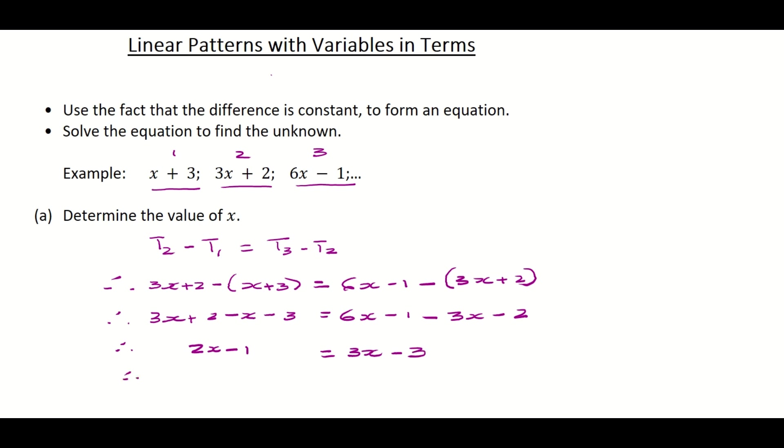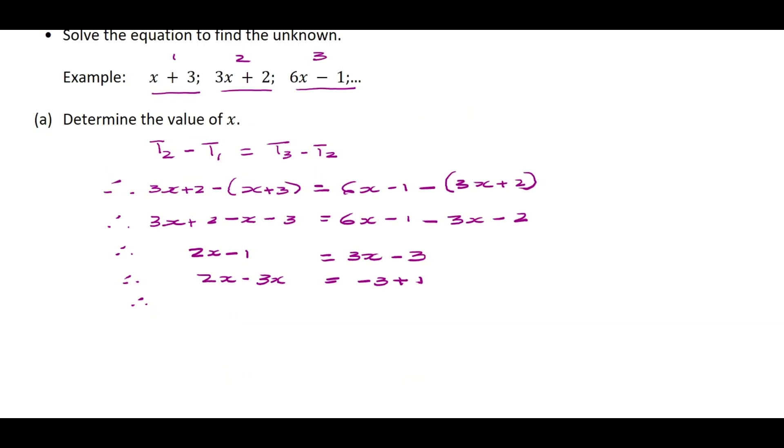Put all the x's on one side. You've got 2x minus 3x is equal to negative 3 plus 1. Therefore, negative x is equal to negative 2. Therefore, x is equal to 2.